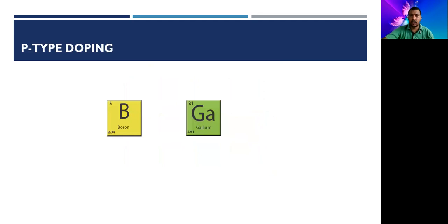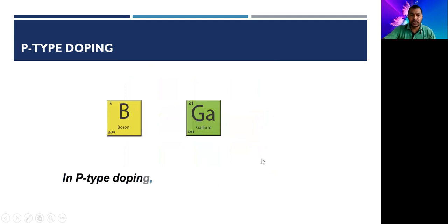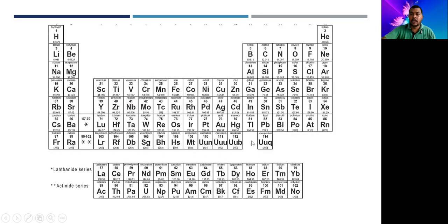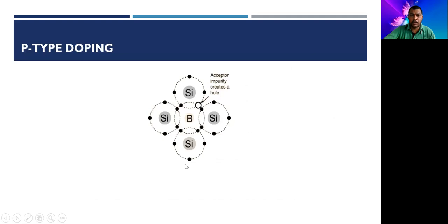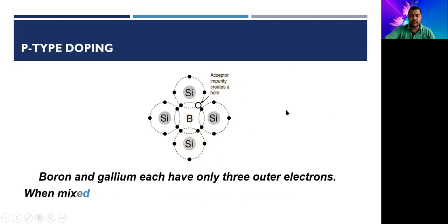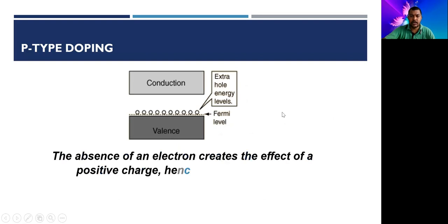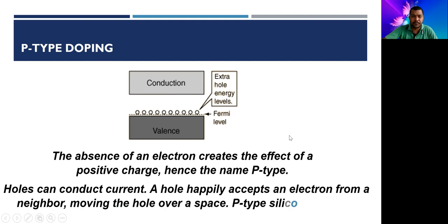For a P-type semiconductor, boron and gallium are added. These are trivalent impurities — they have three electrons in their outermost shell. These are Group 3 elements: boron, aluminum, gallium, indium, and thallium. When added, three electrons make three covalent bonds and one space is left, which is called a hole. This absence of an electron creates an effect of positive charge, hence the name P-type semiconductor.